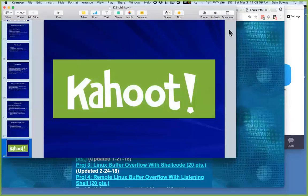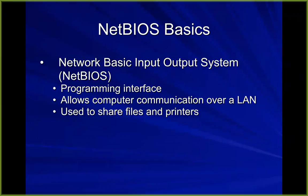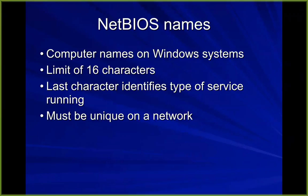NetBIOS is a system to refer to objects on a local area network — to share files and printers was the original purpose. Every object has to have a NetBIOS name, which is up to 15 characters, and one last character is used to say what type of object it is. It has to be unique on a network, so there can't be two objects with the same name, and that's why it doesn't scale to the internet — it was only ever intended for local area networks.